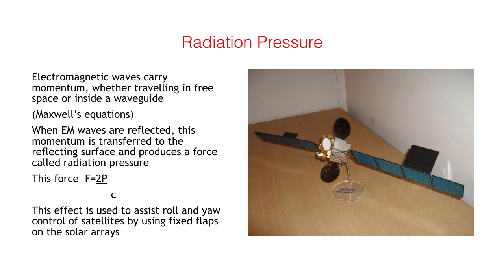The image shows a model of a large communication satellite. Radiation pressure on the fixed flaps mounted off the solar arrays provides assistance to the roll and yaw control system and reduces propellant consumption over the satellite lifetime.